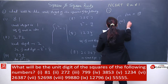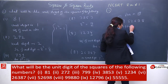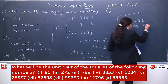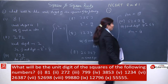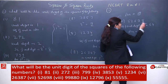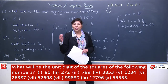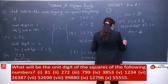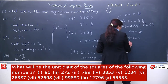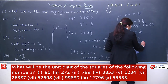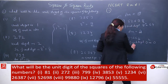Eighth number: unit digit is 0. Square of 0 is 0, so your answer will be 0. Ninth number: unit digit is 6. Square of 6 is 36, but your answer will be 6 only — take only the unit digit. Tenth number: unit digit is 5. So 5 squared is 25, but your answer will be only 5, which is the last digit.